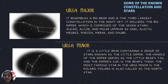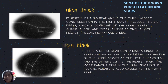The handle of the Little Dipper serves as the little bear's tail and the dipper's cup forms the bear's body. The most famous star in Ursa Minor is Polaris, also called the North Star.